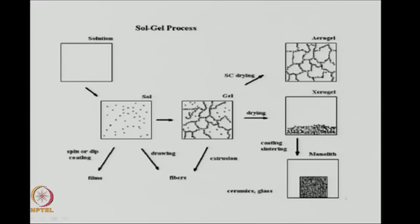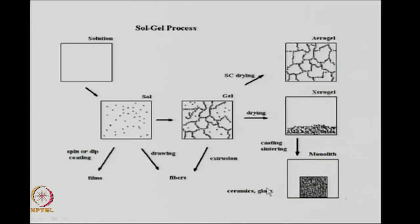In a xerogel the structure collapses and you do not get the network structure anymore. However, with supercritical drying you can remove the liquid between the network structure to get a porous gel called an aerogel — a very porous structure where the liquid has been removed but the structure still remains. The aerogel will have a very high surface area and be catalytically very active, whereas the xerogel will have a lower surface area. You can also get a monolith by taking the xerogel and sintering it at high temperature.